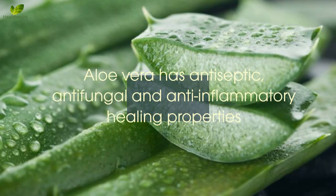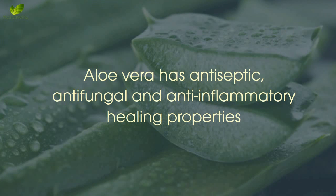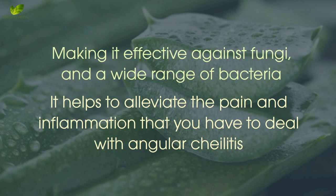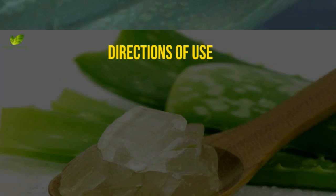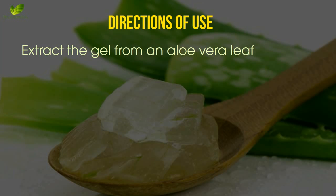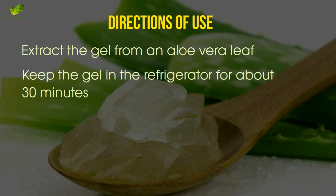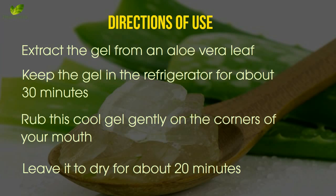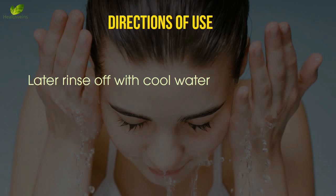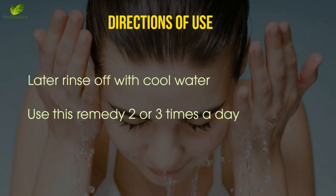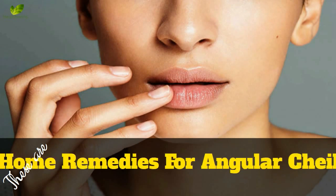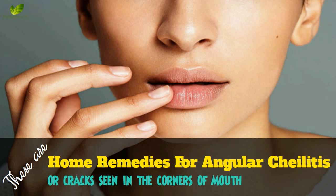Remedy number 3: aloe vera. Aloe vera has antiseptic, antifungal, and anti-inflammatory healing properties, making it effective against fungi and a wide range of bacteria. It helps to alleviate the pain and inflammation associated with angular cheilitis. Extract the gel from an aloe vera leaf, keep the gel in the refrigerator for about 30 minutes, then rub this cool gel gently on the corners of your mouth. Leave it to dry for about 20 minutes, then rinse off with cool water. Use this remedy two or three times a day until the skin at the corners of your mouth heals completely.